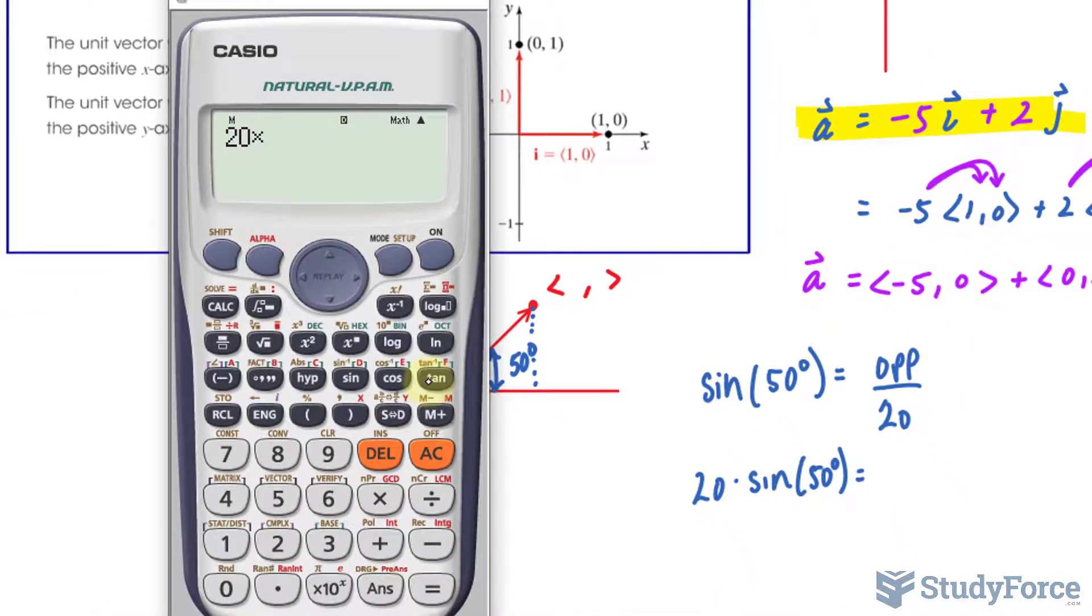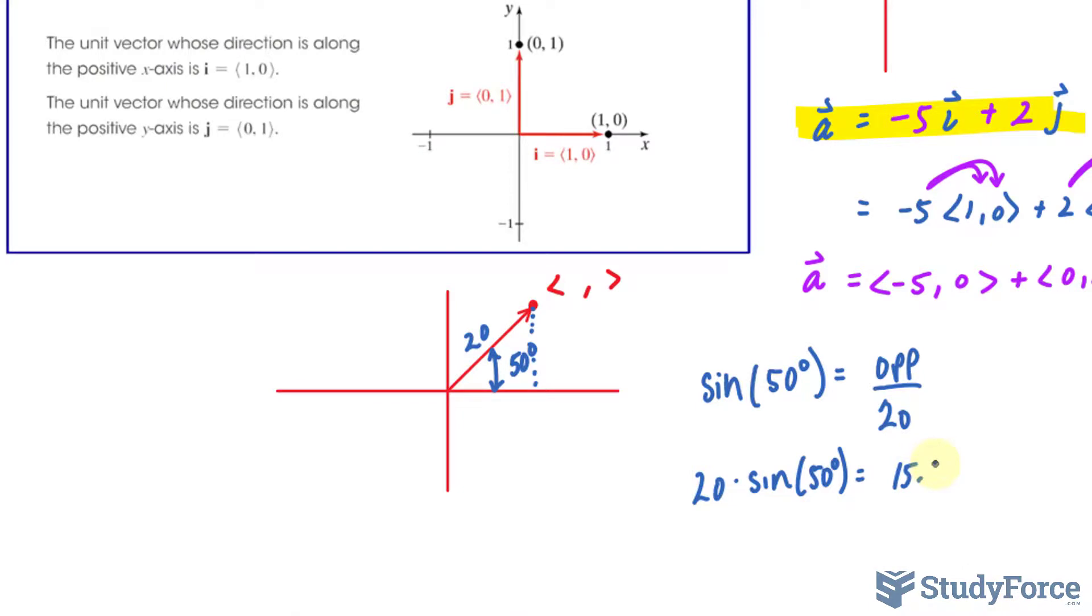So 20·sin(50°)—make sure that your calculator is in degrees—and I get 15.32. This means that this component is 15.32.